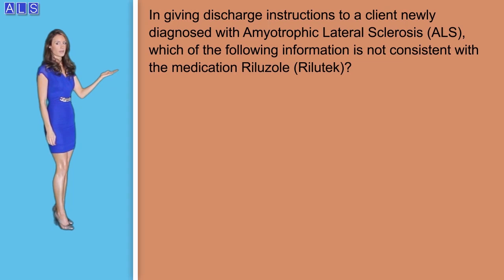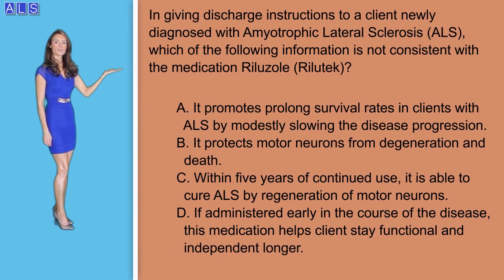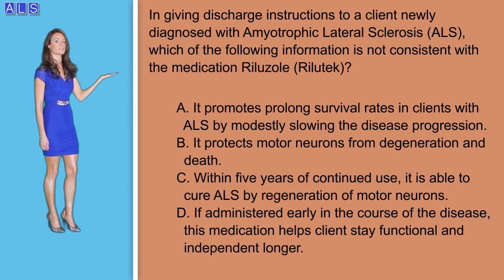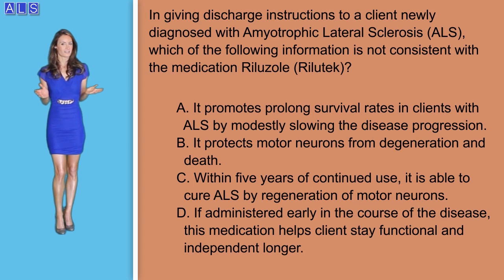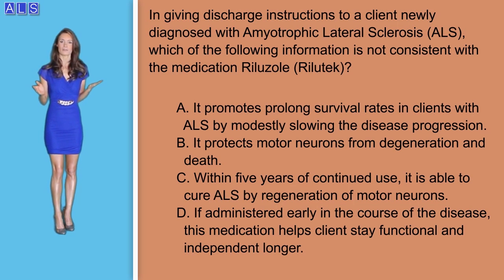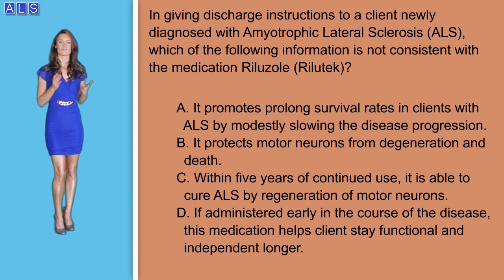Question number three: in giving discharge instructions to a client newly diagnosed with ALS, which of the following information is not consistent with the medication riluzole? A) it promotes prolonged survival rates by modestly slowing down disease progression; B) it protects motor neurons from degeneration and death; C) within five years of continued use it is able to cure ALS by regeneration of motor neurons; or D) if administered early in the course of the disease, this medication can help the client stay functional and independent longer. Many NCLEX-style questions are negatively written — when approaching these, read carefully to spot the negatively phrased question.